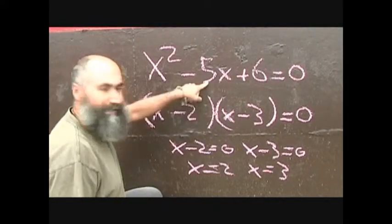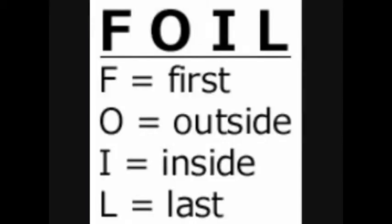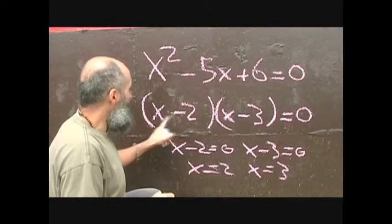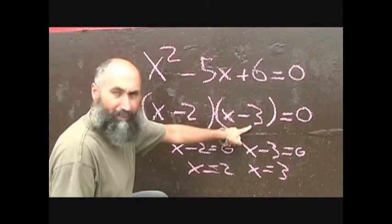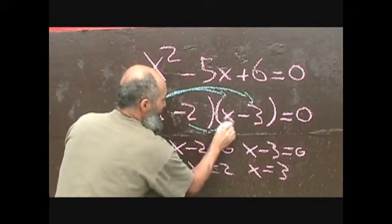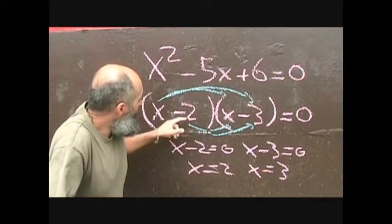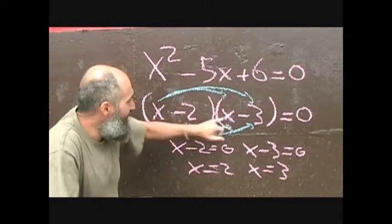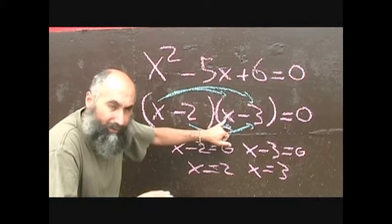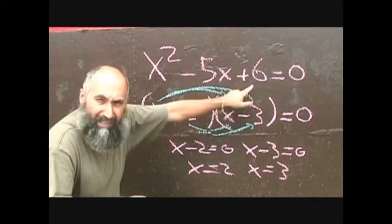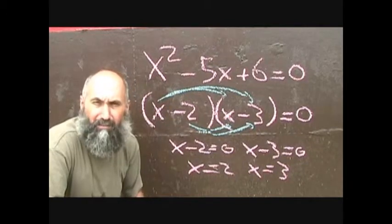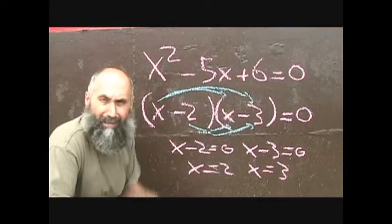Now, if you want to go from the factored form back to the expanded form, you use FOIL — first, outside, inside, last numbers multiplied together. I prefer to just do it visually. x times x is x squared. x times negative 3 is negative 3x. Negative 2 times x is negative 2x. And negative 2 times negative 3 is 6. Then negative 3x plus negative 2x gives you negative 5x. That's straightforward FOILing or expanding, and it takes you back to the original equation.